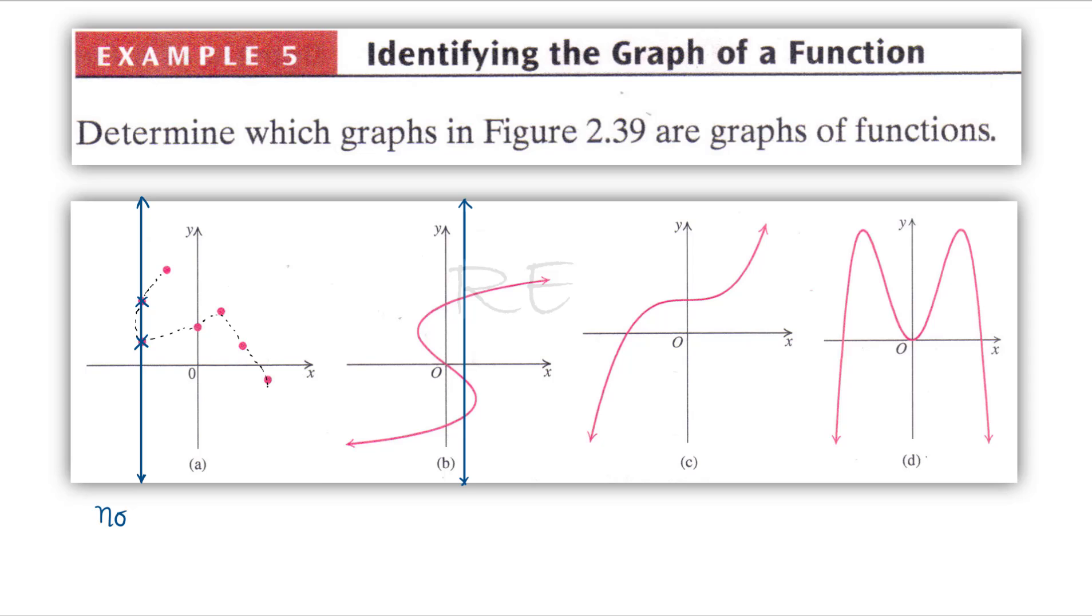Same thing for the second curve, which has three intercepts—this is not a function. The third one, c, will only have one intercept. Doesn't matter which way you draw the vertical line. Therefore, c passed the vertical line test, so c is a function. And d also will pass the vertical line test—only one intercept. D is also a function.